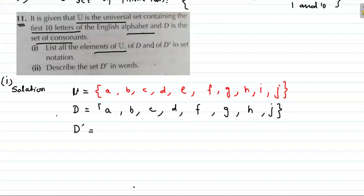Now for D' (D dash): D' contains all elements of the universal set other than D. When we remove D's elements (the consonants), the remaining elements are E and I — the vowels. So D' = {E, I}.